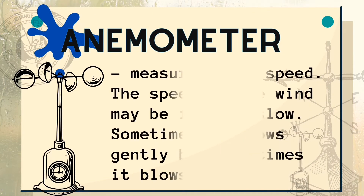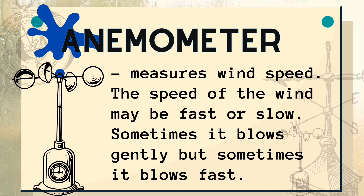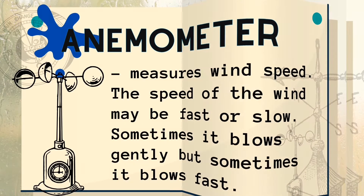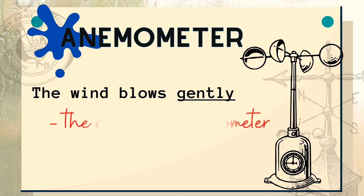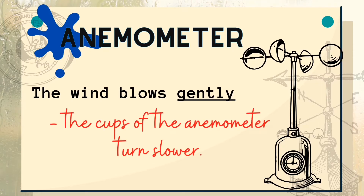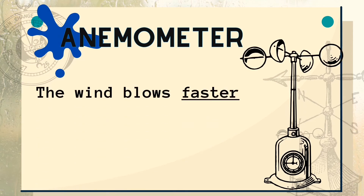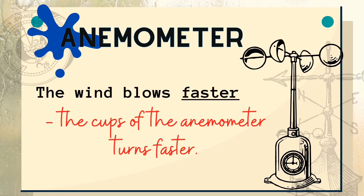The next instrument is the anemometer. It measures wind speed. The speed of the wind may be fast or slow — sometimes it blows gently, but sometimes it blows fast. There are four cups mounted on arms attached to a rotating shaft. The cups turn around as they are pushed by the wind. As the wind blows gently, the cups of the anemometer turn slower. As the wind blows faster, the cups turn faster too. A change in speed indicates a change in wind speed.